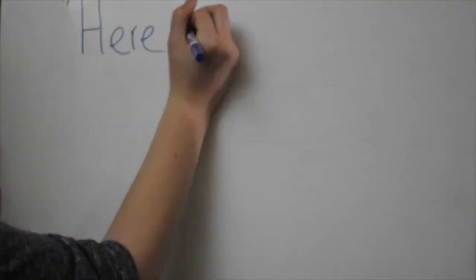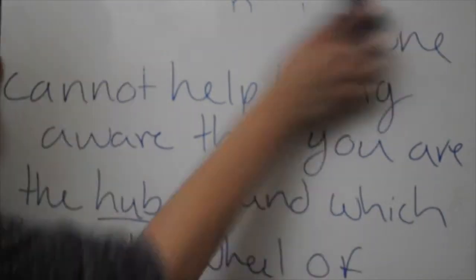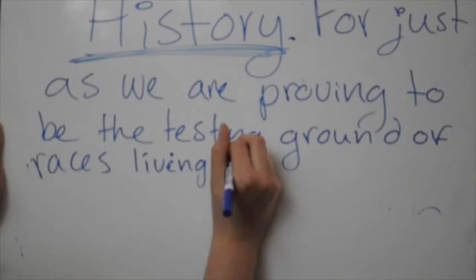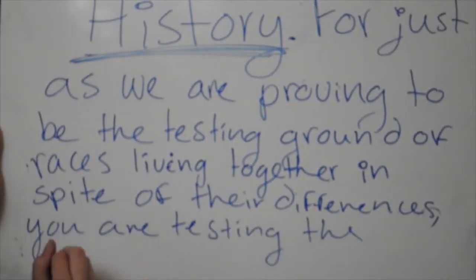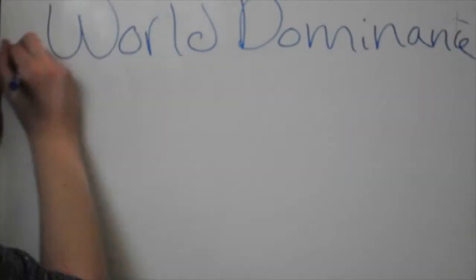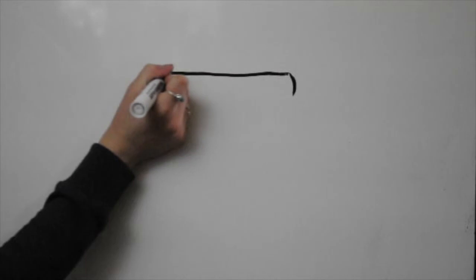He said, 'Here in Berlin, one cannot help being aware that you are the hub around which turns the wheel of history. For just as we are proving to be the testing ground of races living together in spite of their differences, you are testing the possibility of coexistence for the two ideologies which now compete for world dominance. If ever there were a people who should be constantly sensitive to their destiny, the people of Berlin, East and West, should be they.'